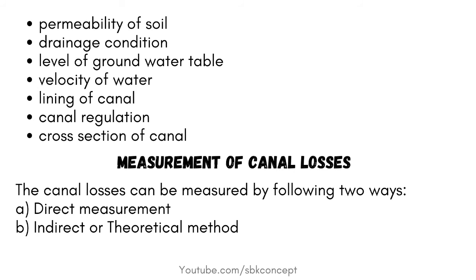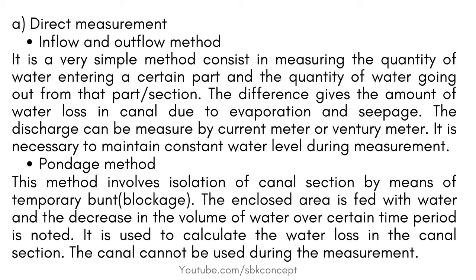Measurement of Canal Losses: Canal losses can be measured by two ways — direct measurement and indirect or theoretical method. Direct Measurement uses the Inflow and Outflow method. It is a very simple method that consists of measuring the quantity of water entering a certain section and the quantity going out. The difference gives the amount of water loss due to evaporation and seepage. The discharge can be measured by current meter or venturimeter, and it is necessary to maintain a constant water level during measurement. Punde's method involves isolation of a canal section by means of a temporary bund. The enclosed area is fed with water and the decrease in volume of water over a certain time period is noted, used to calculate the water loss. The canal cannot be used during the measurement.